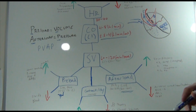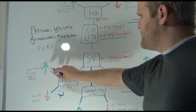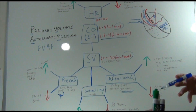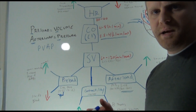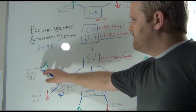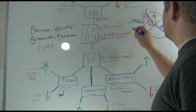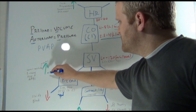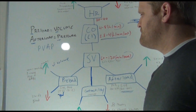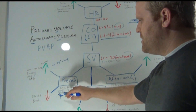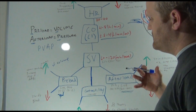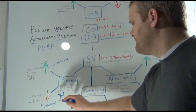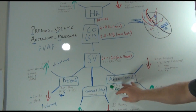If preload is elevated — meaning too much volume — we use venous vasodilators like nitrates, diuretics, ACE inhibitors, and ARBs to decrease volume. If preload is decreased — low volume coming in — we give things like fluid and blood to increase volume.